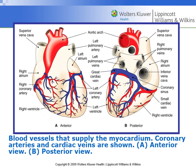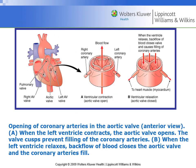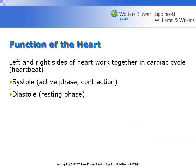Here we see the coronary artery, very important for bringing blood to the heart muscle, the coronary vein, and the coronary sinus, where blood moves between these two structures.